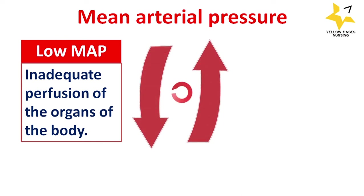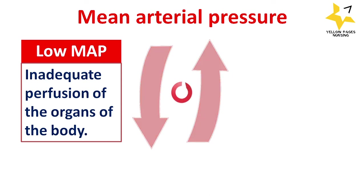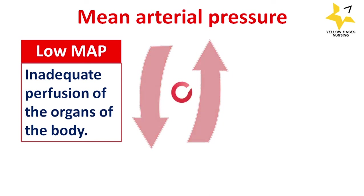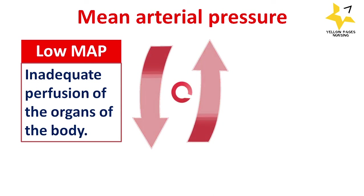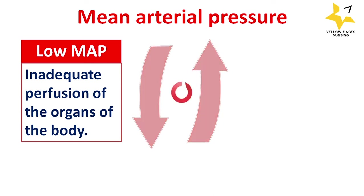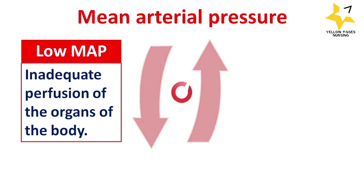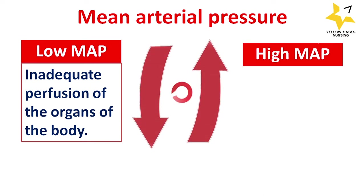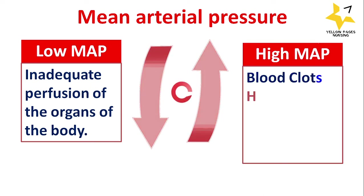As a result, the vital organs will not get enough oxygen perfusion and will become hypoxic — a condition called ischemia. Low MAP can be life-threatening. In the case of high mean arterial pressure, the heart needs to work harder than normal in order to push against the elevated pressure in the vessels.